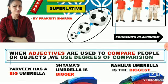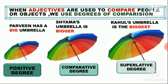Degree of comparison is when we compare people or objects — jab hum noun ko compare kerte hai, using certain adjectives. For example, noun yaha pe amrela hai. How will you compare the amrela? Amrela is big, bigger, and biggest.